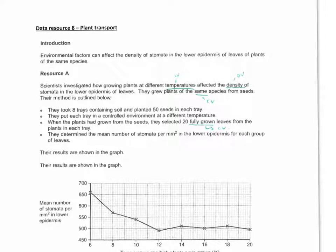Okay, so this data video is about plant transport. Investigations look at the effect of temperature on the density of stomata on the lower epidermis of leaves. So the independent variable would be the temperature, and we've got a range of those. And we're measuring, so the dependent variable is the density, so the number of stomata per millimeter squared on the lower epidermis.